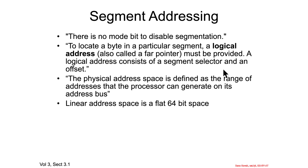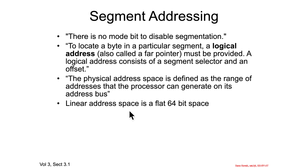Segment addressing uses what's called a logical address, also known as a far pointer, as your starting point. From there you're trying to get to a physical address, and the physical address space is defined as the range of addresses that the processor can generate on its address bus — so the address bus is the thing going out to RAM. You start with a logical address, convert it to a linear address, which is treated as the 64-bit address space, and from that you find some specific address in the physical range.